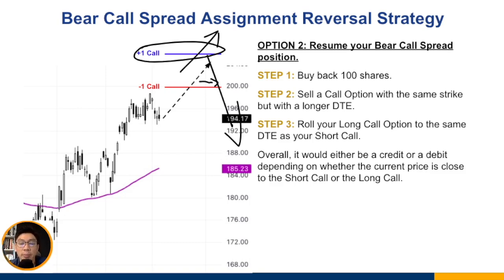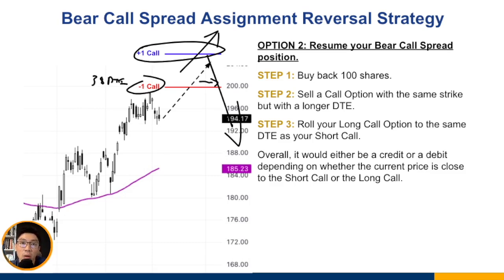I want to put out this option because some of you do want to hold on to this bear call spread and not let the assignment disrupt your original idea. Especially if your original call spread has still many days left — for example, if you have 38 DTE left and get assigned on the short call, this would disrupt your strategy. If you planned to exit at 21 DTE, you may want to resume that position. Rolling for a debit could be considered in that case.